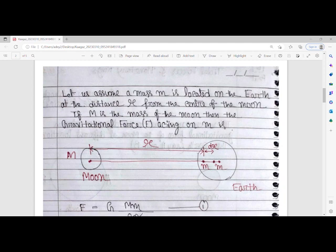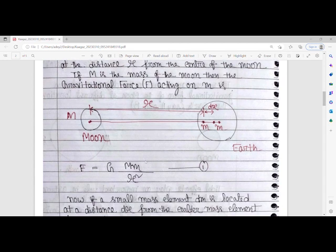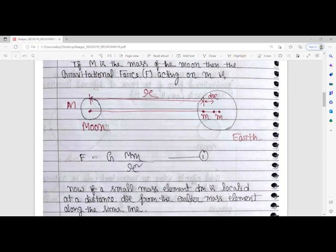If capital M is the mass of the moon, then the gravitational force acting on m is F = GMm/r², where G is the universal gravitational constant. This is our equation number one.